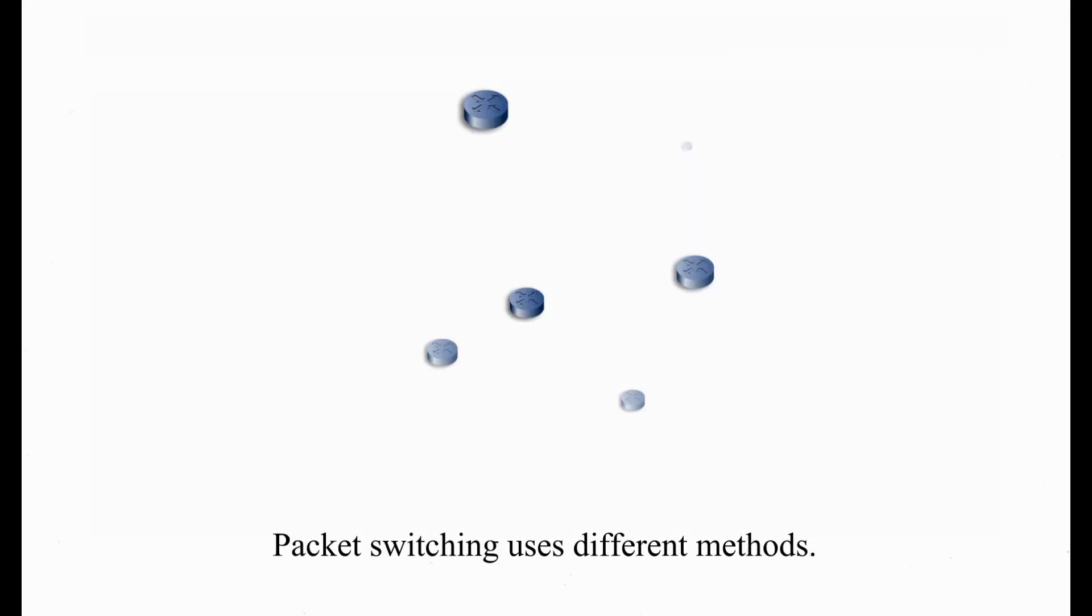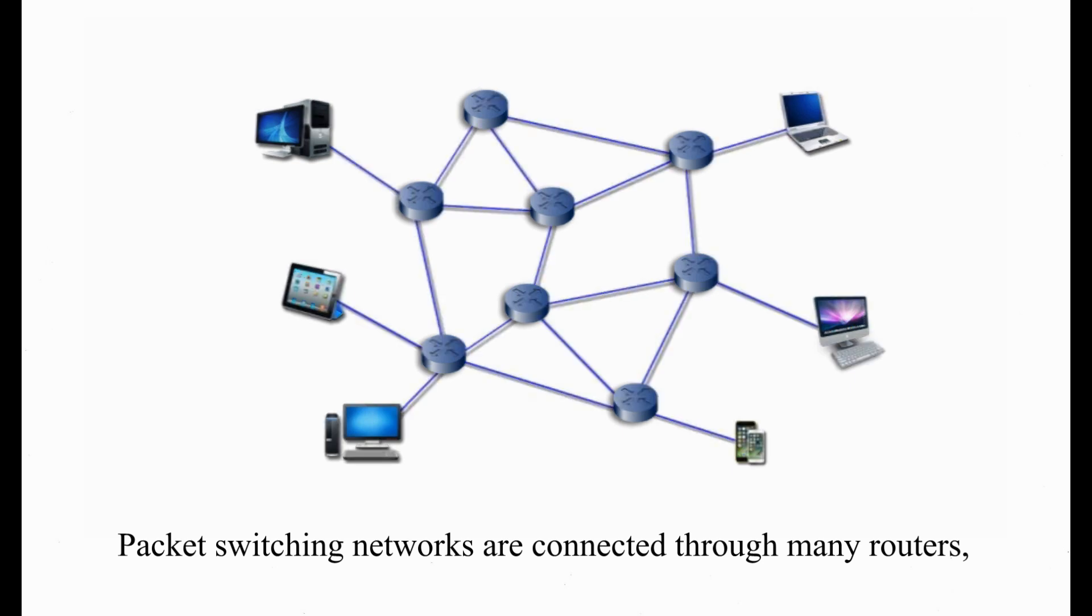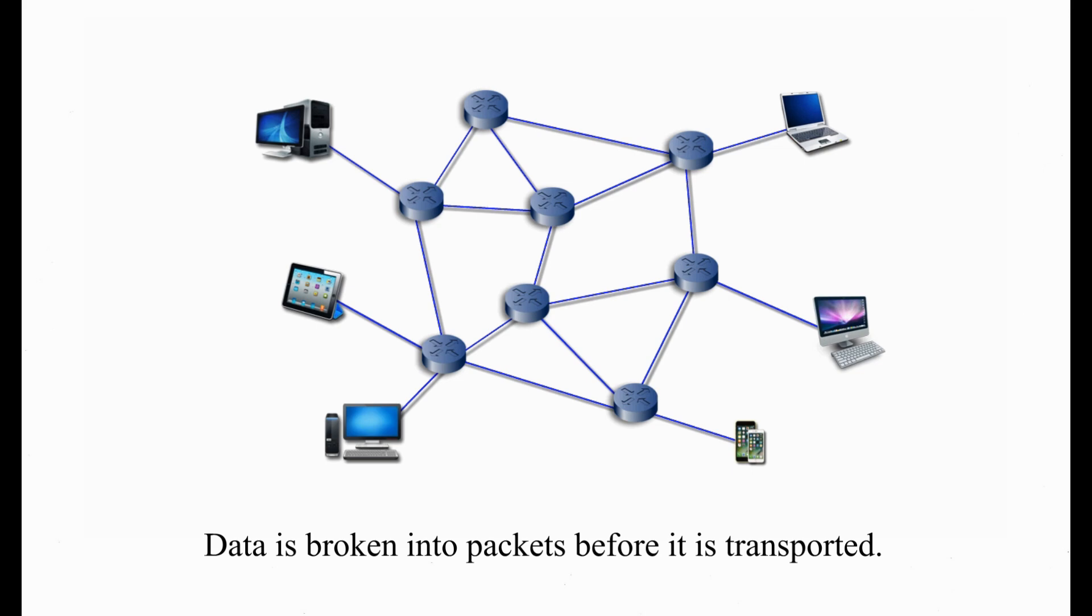Packet switching uses different methods. Packet switching networks are connected through many routers, each serving different segments of networks. Data is broken into packets before it is transported.